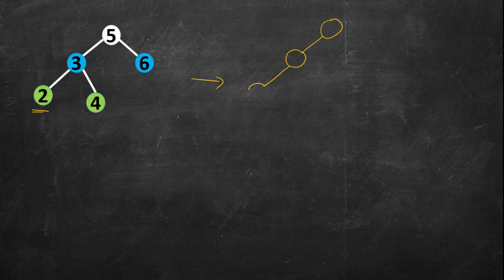Node 2 knows the answer and returns 2; node 4 also returns 4. Now the parent node knows the sum is 6, because left returned 2 and right returned 4. You can see the recursion here — root calls left, left calls its left and right, and once left is done it calls right, just like any standard tree traversal.